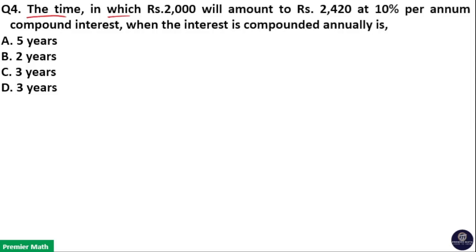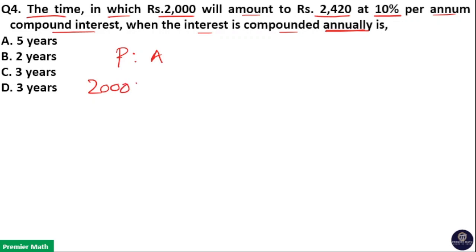Find the time in which ₹2000 will amount to ₹2420 at 10% per annum compound interest, compounded annually. Take the ratio between principal and amount — principal is 2000 and amount is 2420.